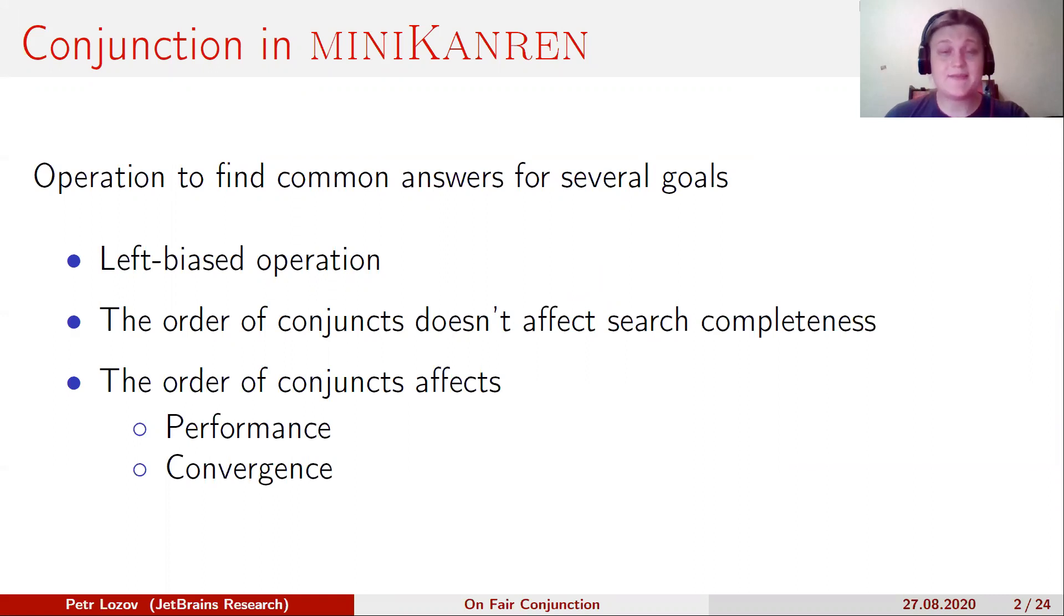Classical conjunction is a left-biased operation. In other words, the conjunction necessarily evaluates the left conjunct. The right conjunct is evaluated for each answer of the left conjunct. The order of conjuncts is critically important due to the asymmetric nature of the conjunction.